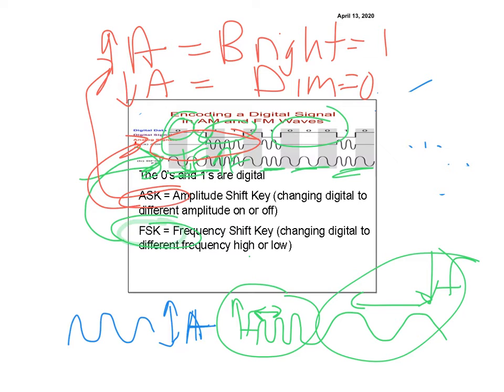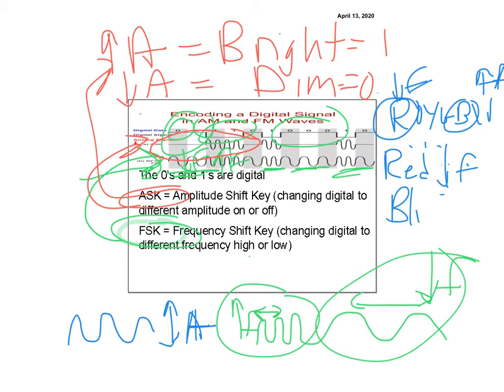And if, on the other hand, I wanted to do frequency modulated, then I could have, so remember the colors go ROYGBIV. So this is a higher frequency, and this is a lower frequency. You need to know that. So if I did red and blue, red would equal, sorry, red would not equal high, red would equal low frequency, and blue would equal a high frequency.